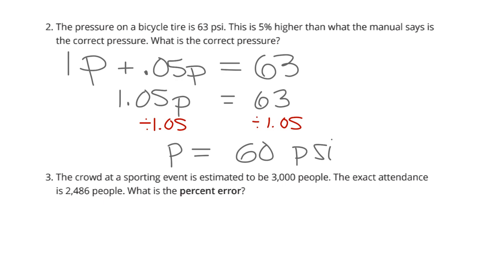Continuing on now to 3. The crowd at a sporting event is estimated to be 3,000 people. The exact attendance is 2,486 people. What is the percent error? Well, to find percent error, we need to find the amount of error and divide it by the actual amount of people.